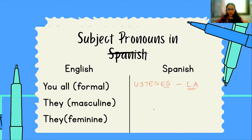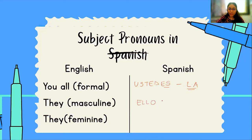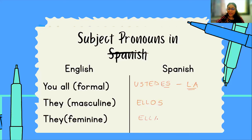Now let's come to the last few pronouns. We looked at 'él' and 'ella' — he and she. What are their plurals? For 'they' — masculine it is 'ellos,' feminine it is 'ellas.' In English we don't have this distinction; 'they' is 'they' regardless of gender. But in Spanish, they masculine is 'ellos' and they feminine is 'ellas.'